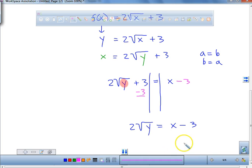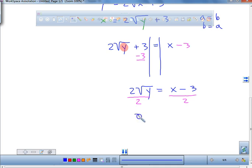Then what do you think? We could square it, but you know what I'm going to do first? We're going to divide everything by 2. So we get √y equals the difference between a number and 3 divided by 2.